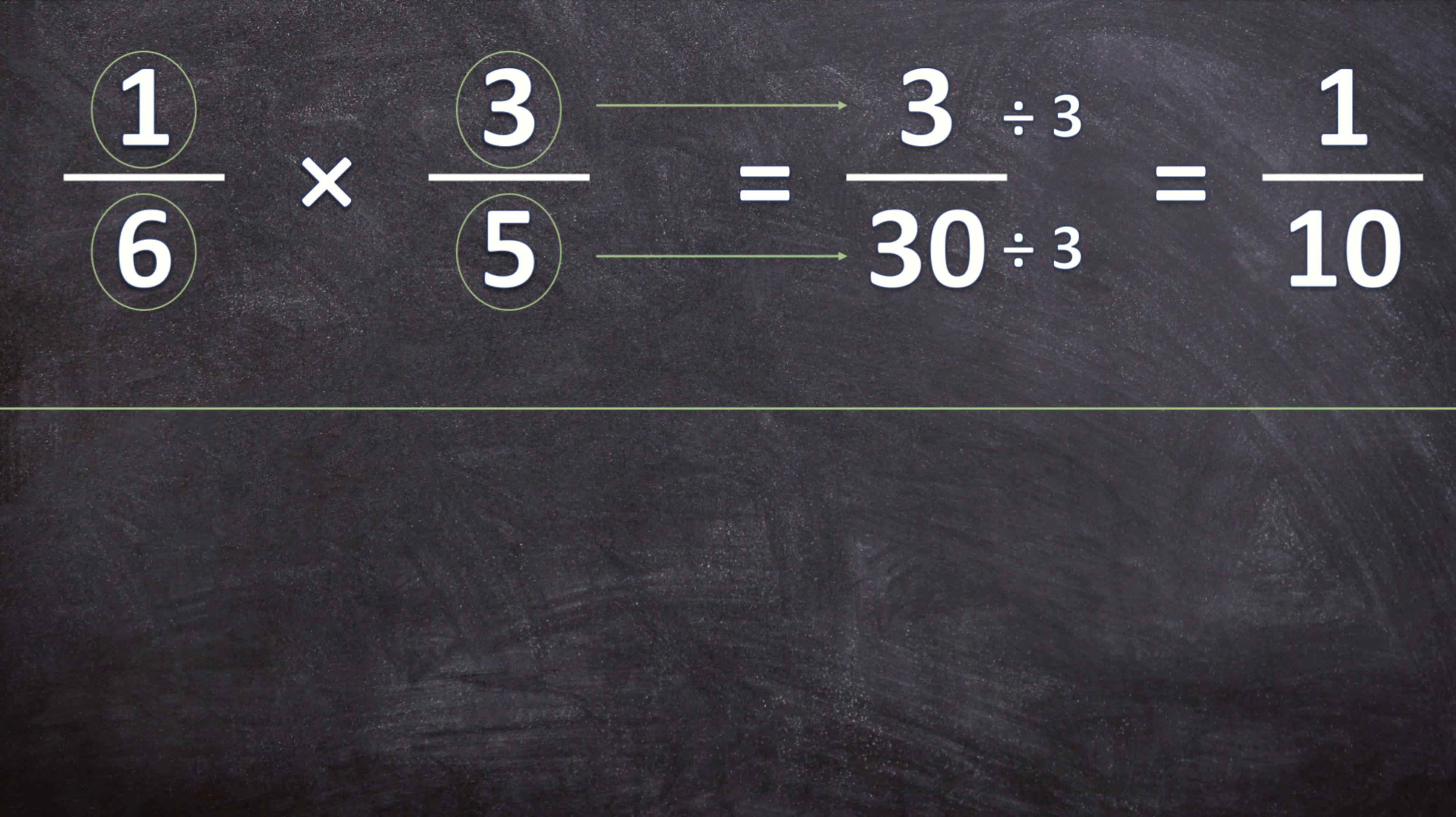Now let's take this exact example and we do our second method. So we're going to see if we can simplify these fractions by doing cross cancellation. Is there any number that I can divide 1 and 5 by to make it simpler? There isn't. So now let's look at the other two. Is there any number I can divide 6 and 3 with to make them simpler? Yes, I can divide 3 and 6 by 3.